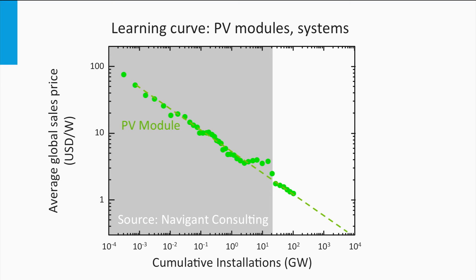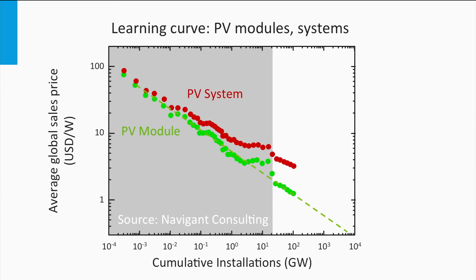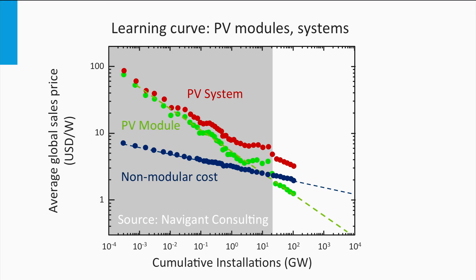The cost price of a PV system is not only determined by the module. The red dots show the decrease in cost price of a complete PV system. In the early days, the system price was dominated by the module price. However, in the current situation, non-modular components — like racking, wiring, inverter, battery for stand-alone systems, and maintenance costs — now play the most dominant role. The difference between the red and green lines corresponds to non-modular costs, and their learning curve is dropping not as fast as the module price. Nowadays, the reduction in system cost price is mainly limited by the cost of non-modular components.